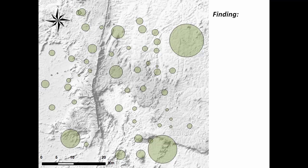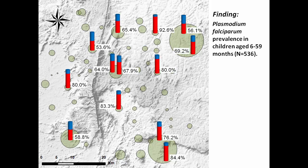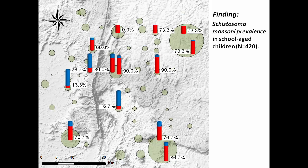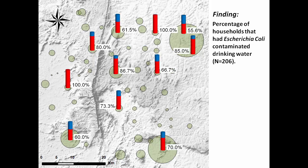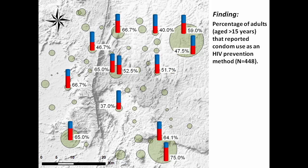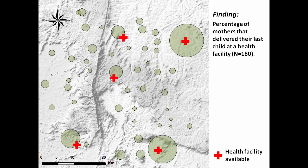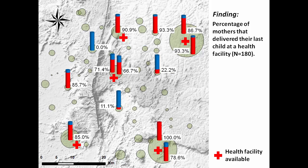The findings of the baseline health survey showed considerable local variation in biomedical indicators such as plasmodium falciparum prevalence in children aged 6 to 59 months and prevalence of schistosoma mansoni infection in school-aged children, as well as in environmental indicators such as the percentage of households that had E. coli-contaminated drinking water. Variation was also found in indicators of knowledge, such as the percentage of adults over 15 years who reported condom use as an HIV prevention method, and in common practice indicators such as the percentage of mothers that delivered their last child at a health facility. These findings illustrate the importance of developing appropriate local level baseline data that can serve as a benchmark for subsequent phases of the health impact assessment process.